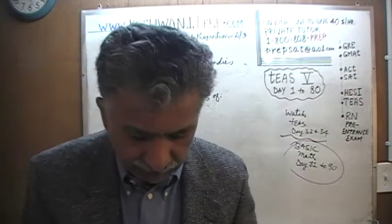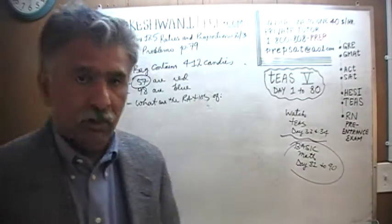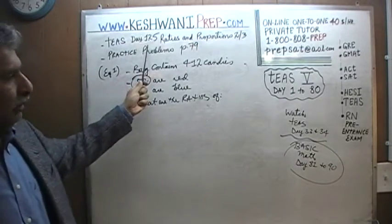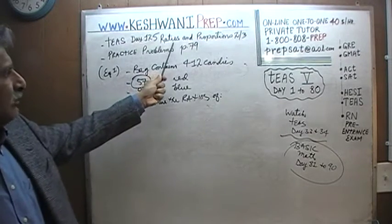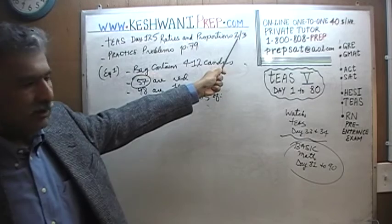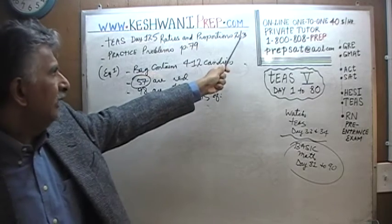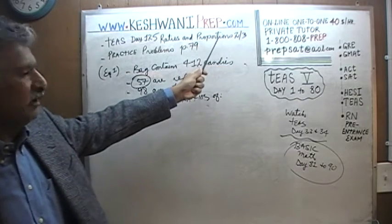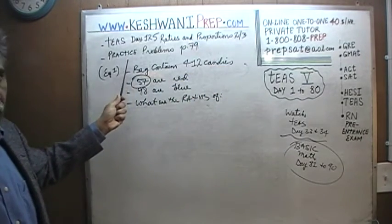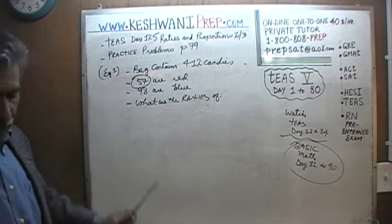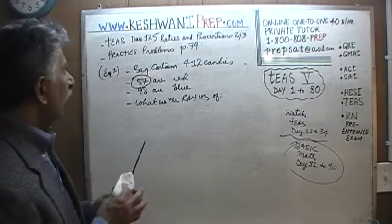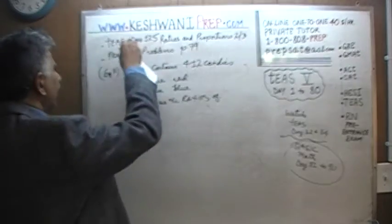Today is our lesson number 125. We are dealing with the concept of ratios and proportions. Today is our second lesson in a series of three. Yesterday we did the first one.